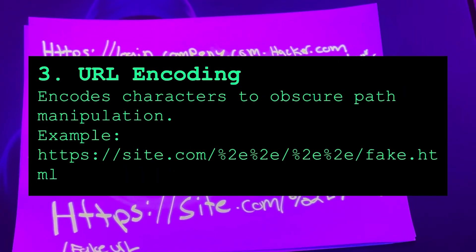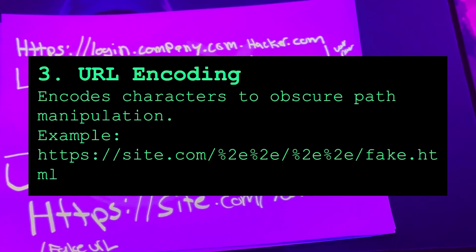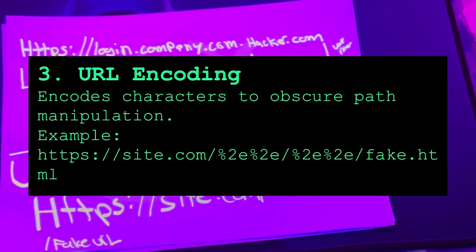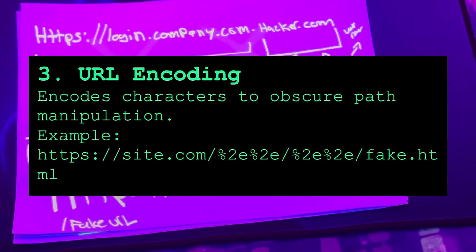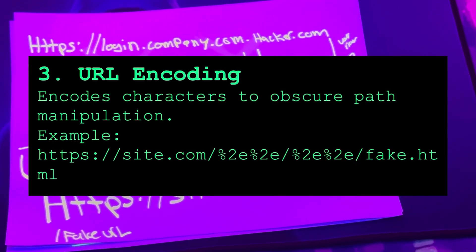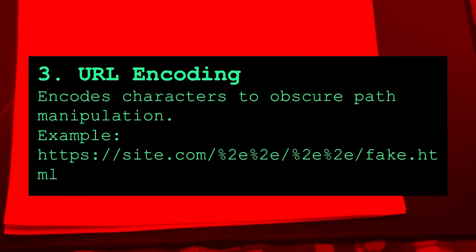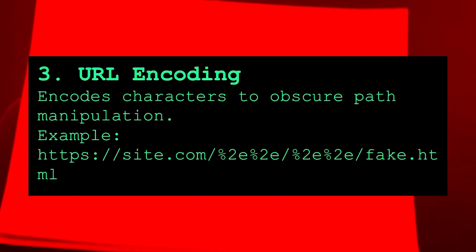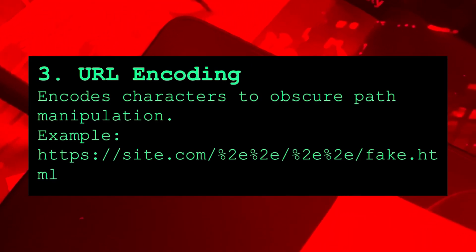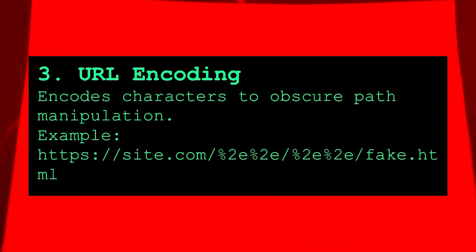URL encoding — this is what tripped up our engineer. This technique replaces characters with percent-encoded values. Why it works: encoding masks the real structure of the URL. It can make malicious paths or redirects look like gibberish, and many users won't think twice before clicking it.